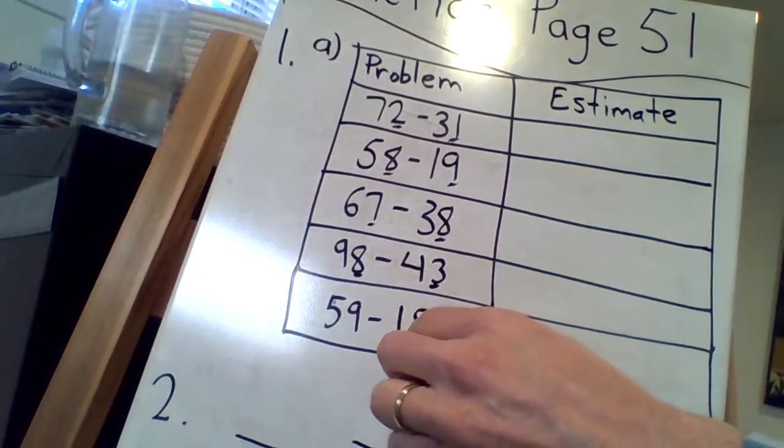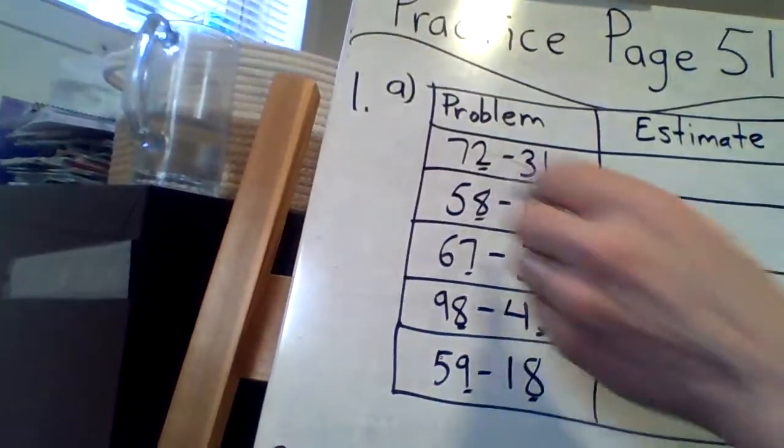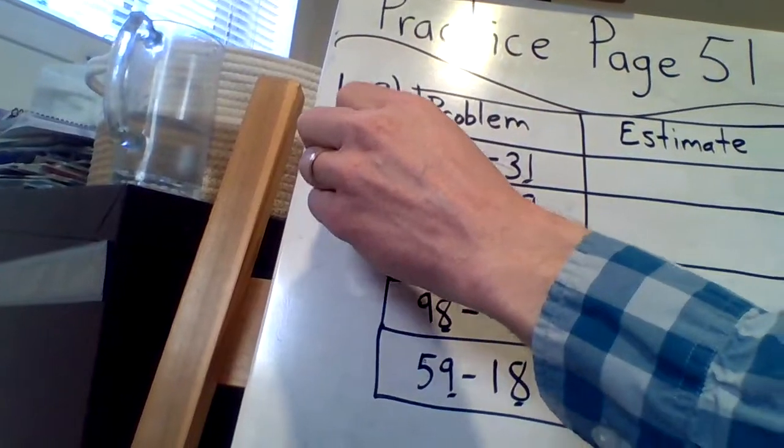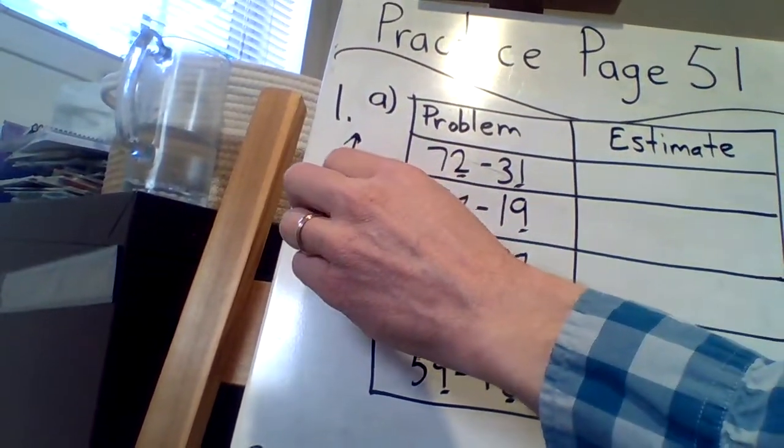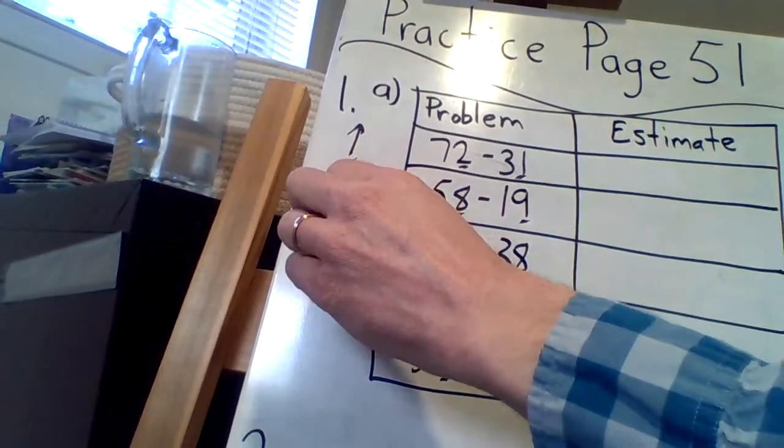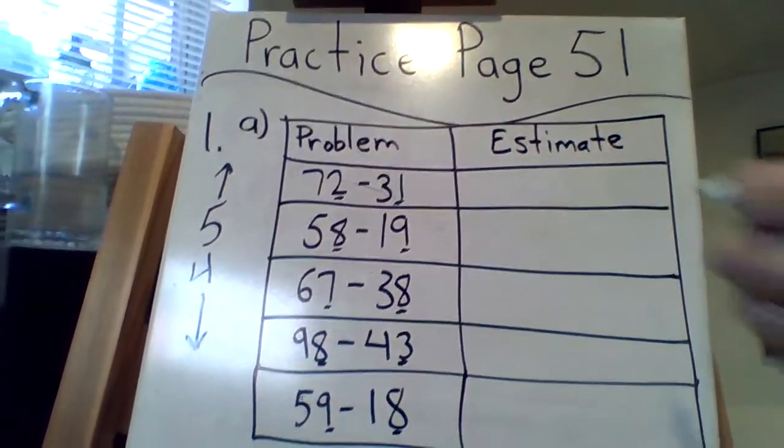And really if you wanted to, you could do something like this. Watch this. 5 means round up and 4 means round down. Okay there you go. That's basically all this is.